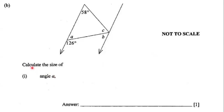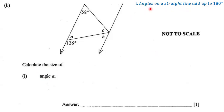Our goal is to calculate the size of angle A. Notice that angles on a straight line add up to 180 degrees — this useful geometrical rule is going to assist us. We have angle A and we have this angle that measures 126 degrees, and they are on a straight line at a common point, so angles on a straight line add up to 180 degrees.